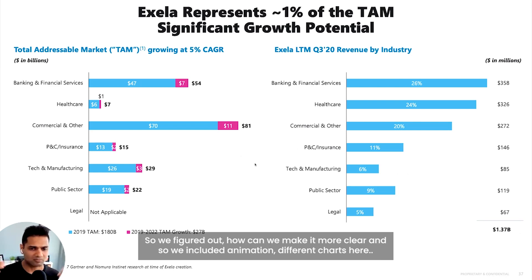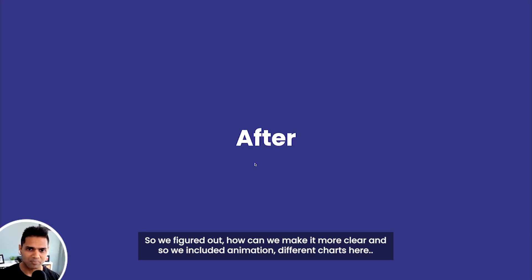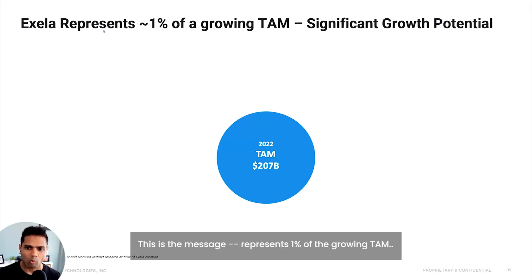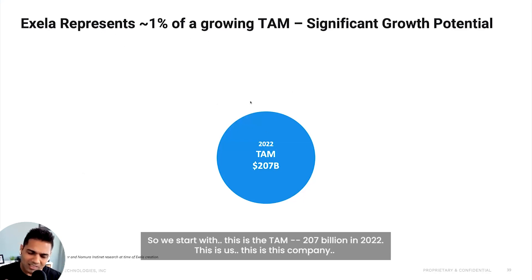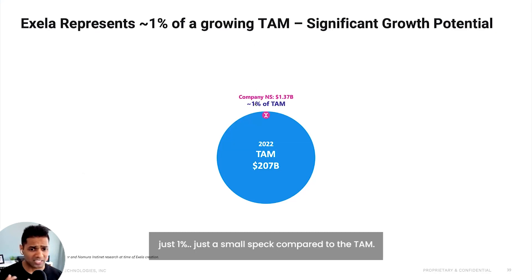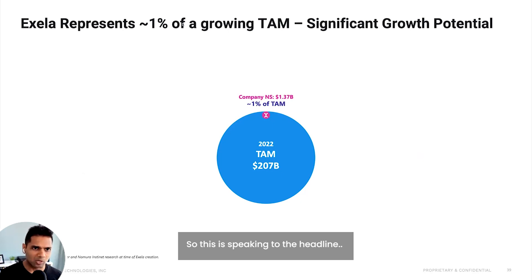So we figured out how we can make it more clear. We included animation here, we included different charts here. The message: represents 1% of the growing TAM. So we start with — this is the TAM, 207 billion in 2022. This is us, this is this company, just 1%, just a small spec compared to the TAM. So this is speaking to the headline.